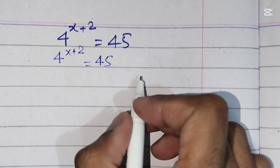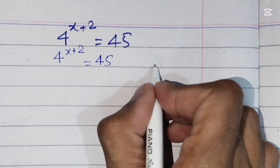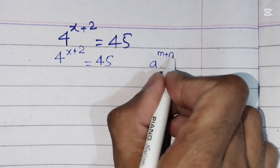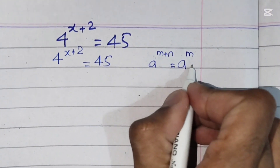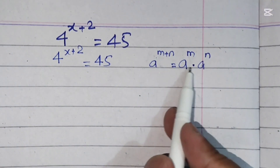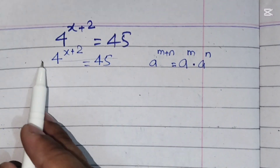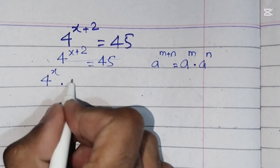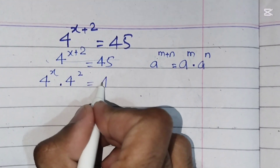Here we will use a formula on the left hand side. The rule is: a power m plus n can be written as a power m times a power n — the same base with exponents that add up. So it will be 4 power x times 4 squared equals 45.